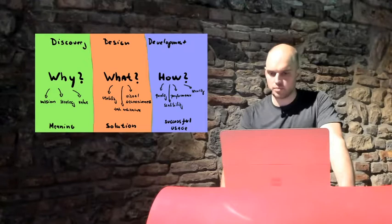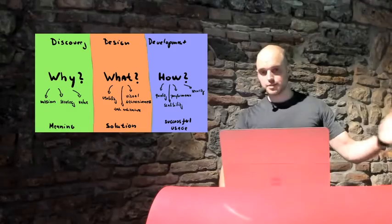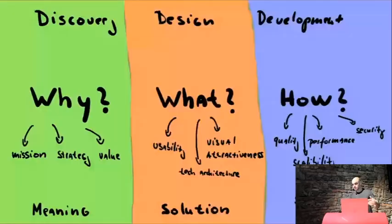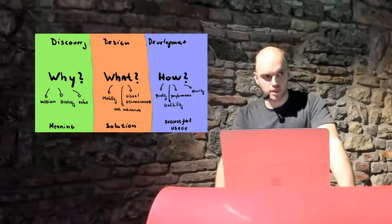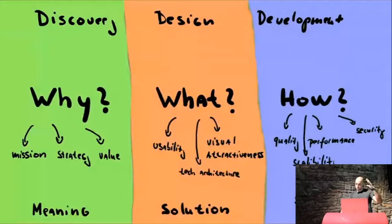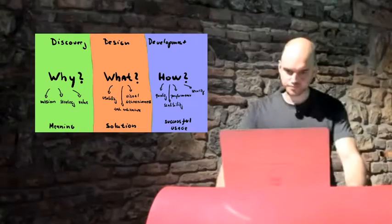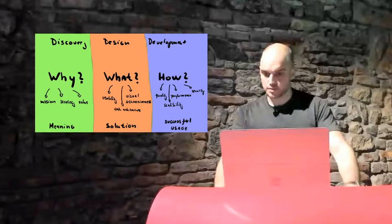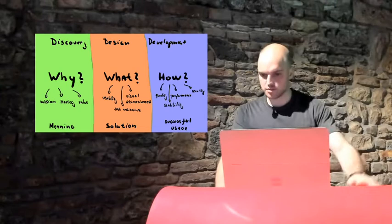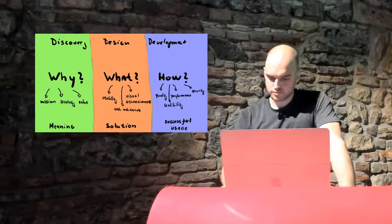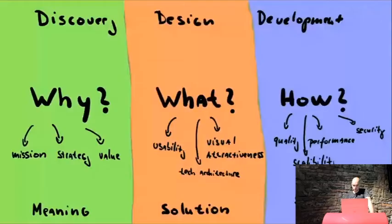We should have a clear understanding of why we are building this product — that's the ultimate goal of the discovery phase. In the design phase, the question is 'what' — what we are building, what is the solution, covering aspects like usability, visual attractiveness, and tech architecture. The outcome of design is that the team clearly knows what they're going to build. In the development phase, it's about actually building it and how, with the goal of running it in production at high quality, performance, security, and scalability.